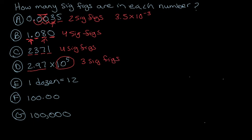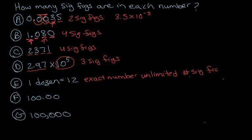For E, we have a conversion factor: one dozen is equal to 12. Remember that one dozen of anything is always 12 — it's not 11.9, it's not 12.2, it's always 12. So it is an exact number. Exact numbers have an unlimited number of significant figures because they do not have any inaccuracies — they are perfectly exact.